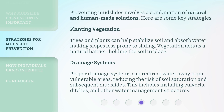Preventing mudslides involves a combination of natural and human-made solutions. Here are some key strategies. Planting vegetation: trees and plants can help stabilize soil and absorb water, making slopes less prone to sliding. Vegetation acts as a natural barrier, holding the soil in place. Drainage systems: proper drainage systems can redirect water away from vulnerable areas, reducing the risk of soil saturation and subsequent mudslides. This includes installing culverts, ditches, and other water management structures.